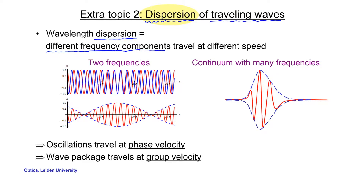We'll consider two different cases. We start with the simple case where the wave contains only two frequency components, sketched here in blue and red. If you take the superposition of these two traveling waves, you'll find a beat, because in some positions in space and time the two waves interfere constructively, giving a large amplitude, and in other regions the waves interfere destructively, giving a very small amplitude.